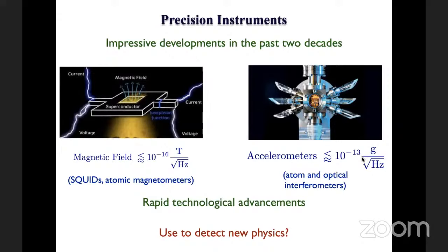Because of these rapid technological advancements, you can imagine how we can use these new techniques to detect new physics — specifically dark matter and maybe gravitational waves as well.